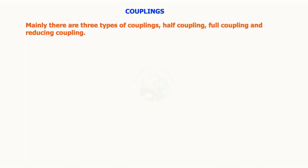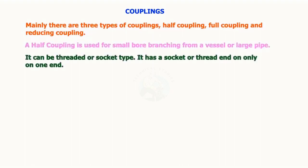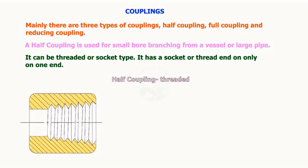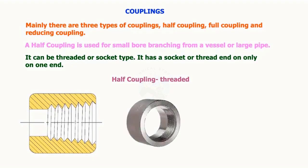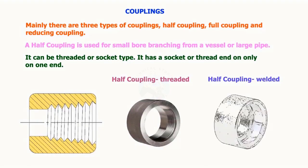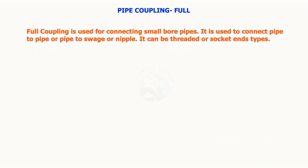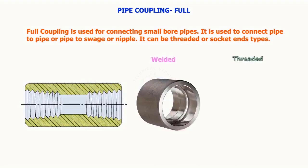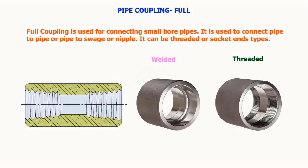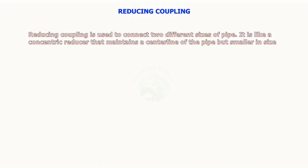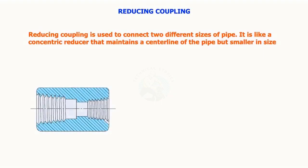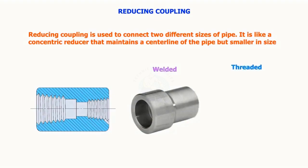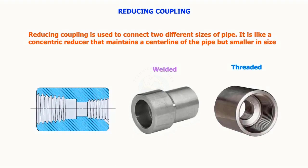Mainly there are three types of couplings: half coupling, full coupling, and reducing coupling. A half coupling is used for small-bore branching from a vessel or large pipe; it can be threaded or socket type and has a socket or thread on only one end. A full coupling is used for connecting small-bore pipes — pipe to pipe, or pipe to swage or nipple — and can be threaded or socket ends. A reducing coupling is used to connect two different sizes of pipes; it is like a concentric reducer that maintains the centerline of the pipe but is smaller in size.